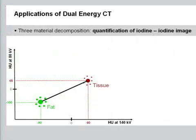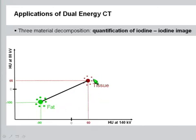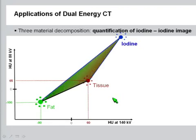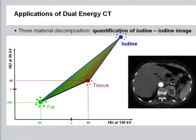A more complex and promising method is three-material decomposition. In the diagram of Hounsfield units at 80 kV versus 140 kV, you first define a baseline given by two materials — for example, fat and soft tissue — where all pixels on that line are a mixture of the two. The third material is iodine. Every pixel located inside the triangle formed by these three points is a mixture of those three materials.